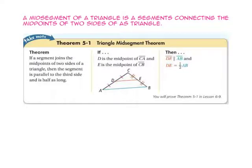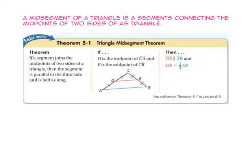In the triangle mid-segment theorem, if a segment joins the midpoints of two sides of a triangle, then the segment is parallel to the third side and is half as long. So, since D is the midpoint of segment CA and E is the midpoint of segment CB, then side DE is parallel to side AB and DE's length is half the length of segment AB.